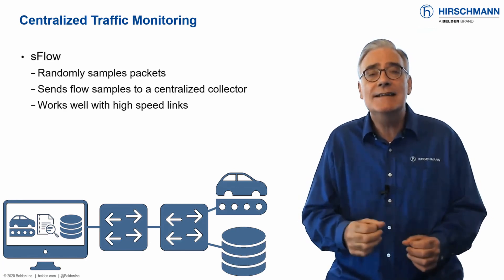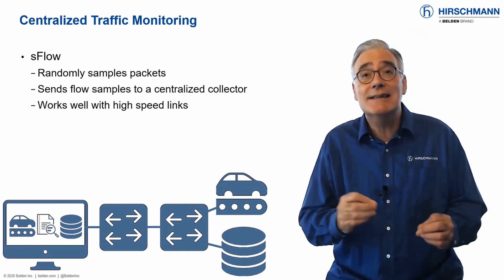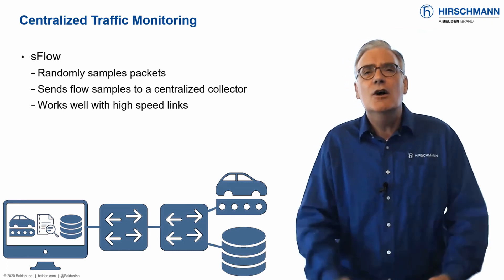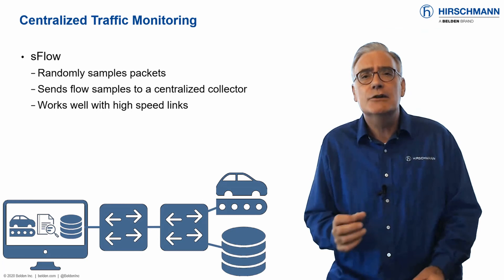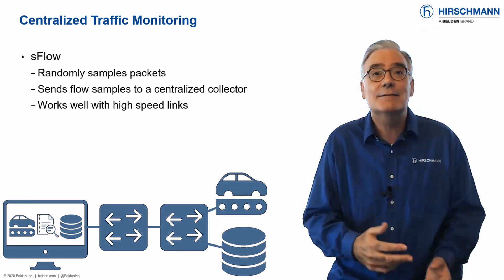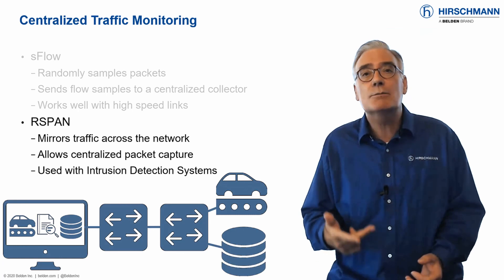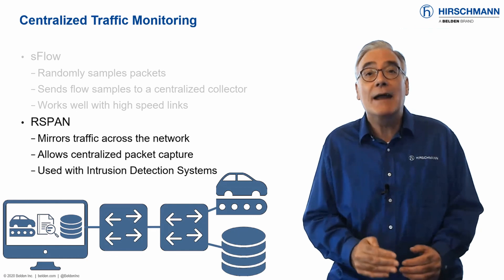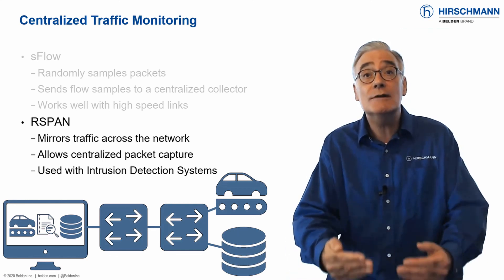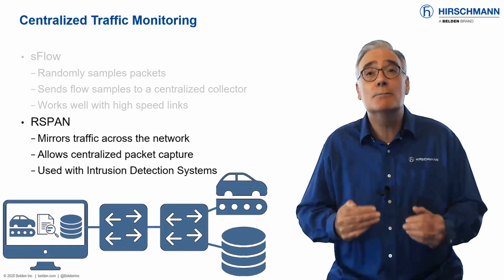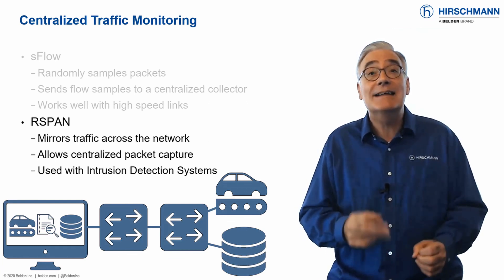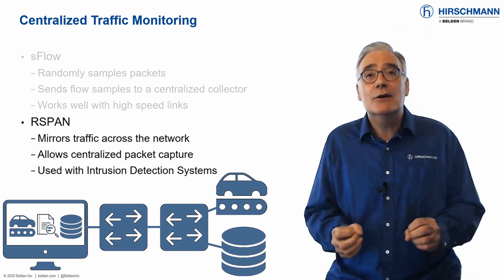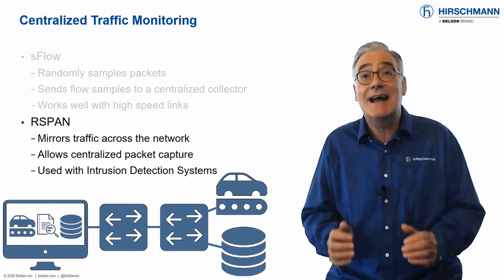sFlow randomly samples data packets and sends the samples to a central sFlow collector for analysis — random samples are normally enough to detect irregular network activity. Remote switch port analyzer, known as RSPAN, allows data from a remote switch to be copied across the network to a local destination port. As every packet is copied, this makes RSPAN an excellent tool to be used in conjunction with intrusion detection systems.